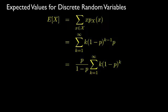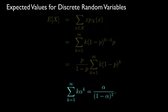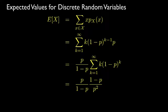If we factor out the terms that don't depend on the index k, we see that the answer is determined by evaluating an infinite summation. This summation is solved by use of an identity for the product of a linear term with a geometric series. Using that identity, we get an equation which reduces to the simple value of 1 over the success parameter p.